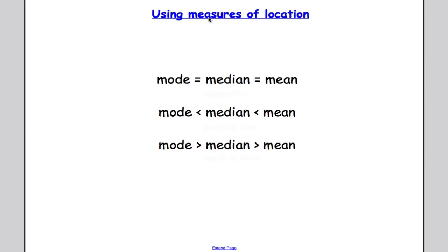Another way we can do it is by looking at the measures of location, which are our averages. If we find that the mode equals the median equals the mean, that tells me my distribution is roughly symmetric. If the mode is less than the median and less than the mean, it's positively skewed. And if the mode is greater than the median and greater than the mean, it's negatively skewed. Just nice to know these.